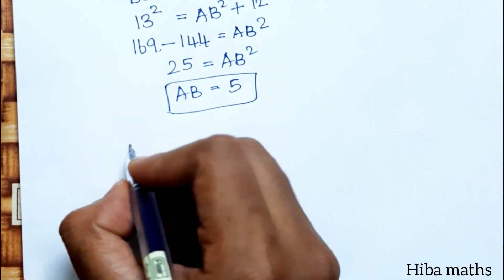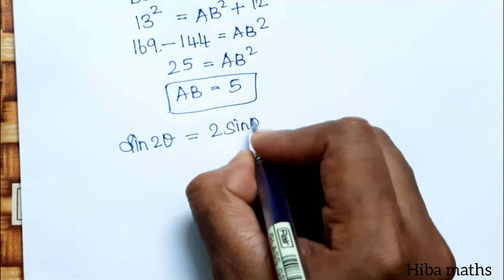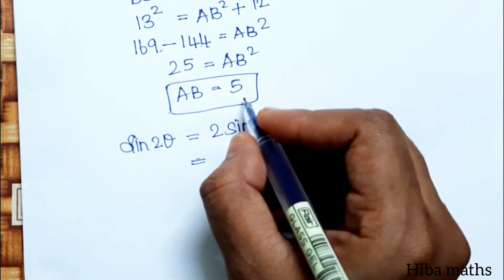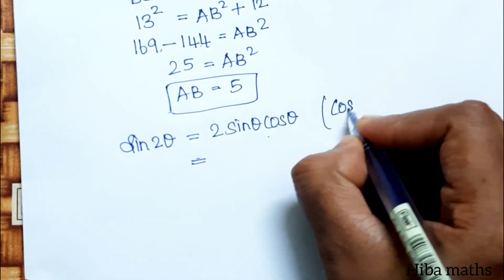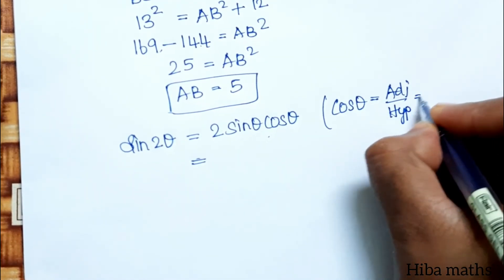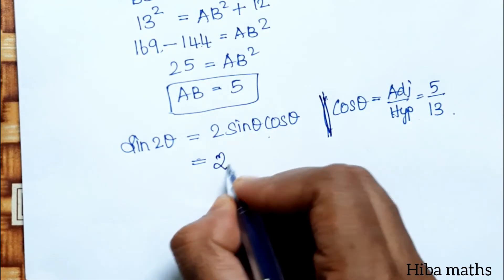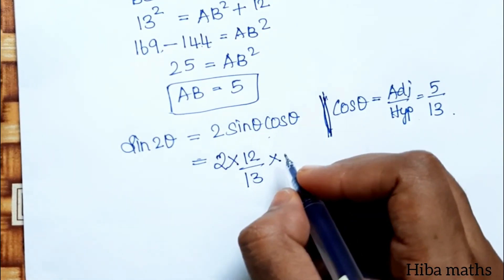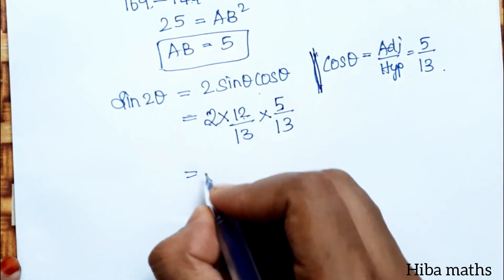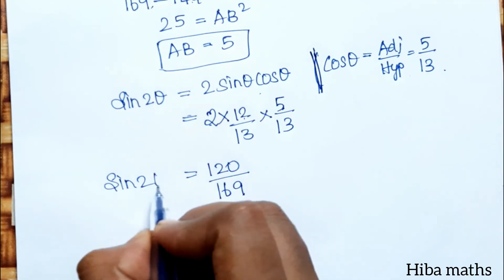Next, we calculate sin2θ. sin2θ = 2 sinθ cosθ. sin θ = 12/13 and cos θ = adjacent/hypotenuse = 5/13. So sin2θ = 2 × (12/13) × (5/13) = 2 × 5 × 12 / 169 = 120/169.